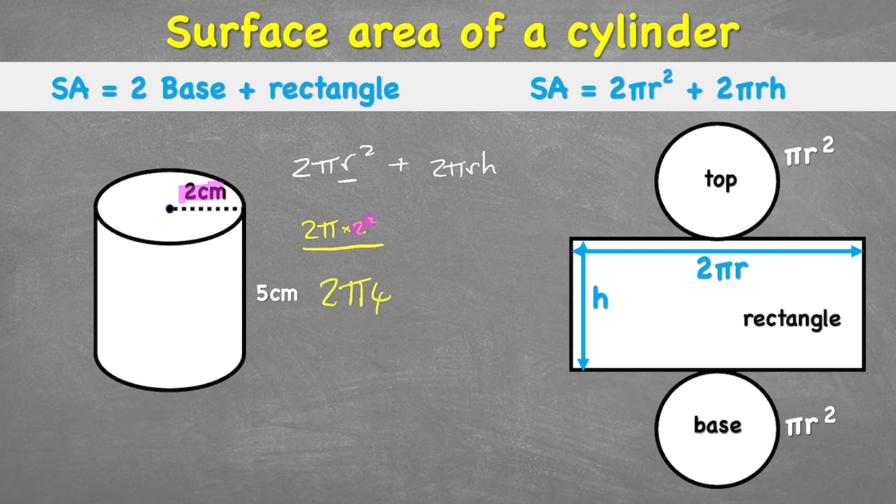Now I'm going to do my π × 4. So I have π, which is essentially 3.141. But I've got a calculator, so I've got π × 4 = 12.57. So the area of both of my circles, which are the top and the base, equals 25.13 centimeters squared.